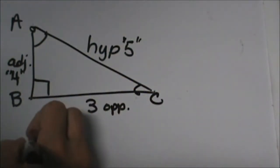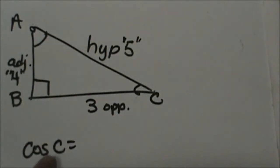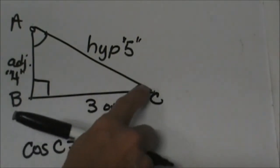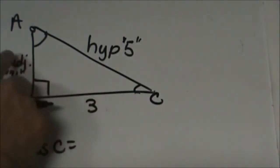What is the cosine of C? Cosine is the adjacent over hypotenuse. Now from angle C we no longer have opposites and adjacent. We have changed our perspective.